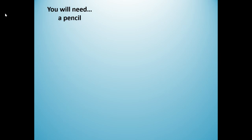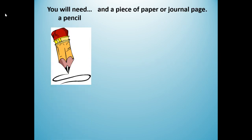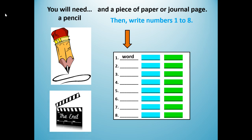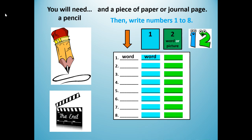For this lesson, you will need a pencil and a piece of paper or journal page. Then you're going to write your numbers 1 to 8. For each number, you're going to write the targeted vocabulary word. At the end of the lesson, I will challenge you to write the word up to two more times — one and two. The second time, you could draw a picture or just write the word again.